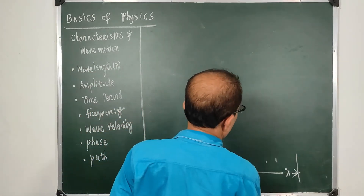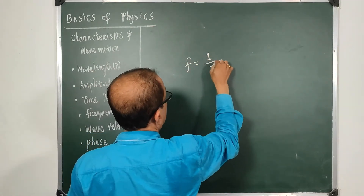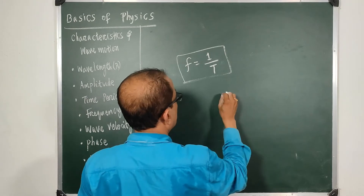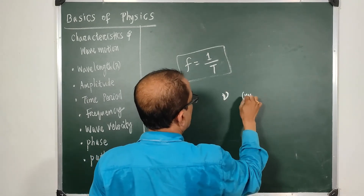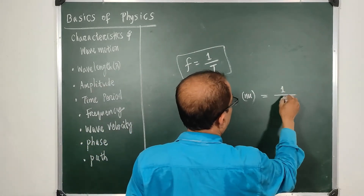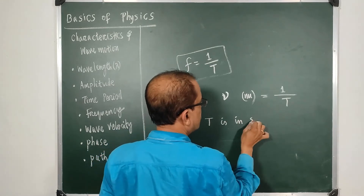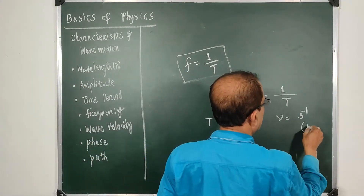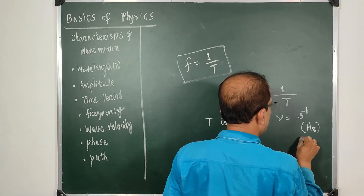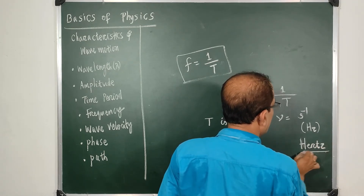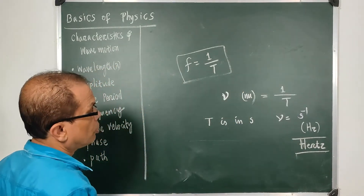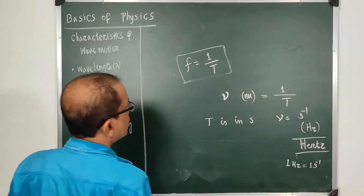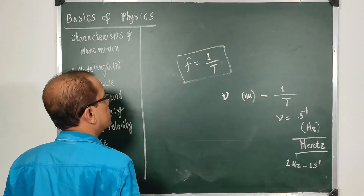Next is frequency. Frequency is the reciprocal of time period. We generally denote it by f, but in physics it is written using the Greek letter nu (ν), where ν = 1/T. If T is in seconds, then ν is in s⁻¹, which is also known as hertz (Hz) — named after the scientist Hertz.